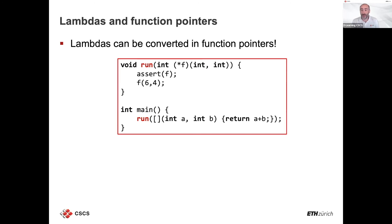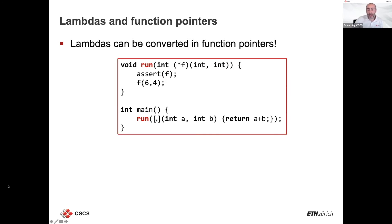A nice feature of lambdas is that they are convertible to function pointers. If you have a `run` function that takes a function pointer — say a function taking two integers and returning an integer — you can call `run` directly with a lambda. The assert here confirms the function pointer is not null, and this code will work.